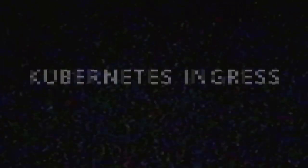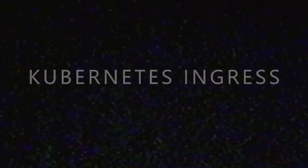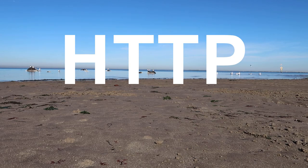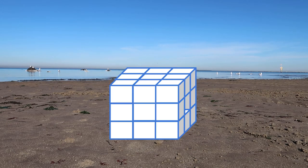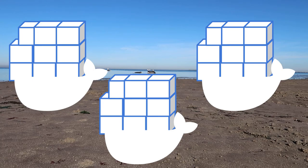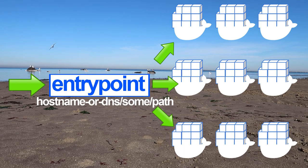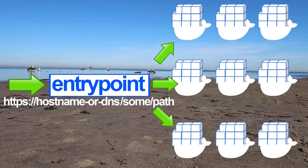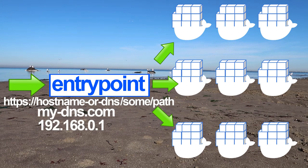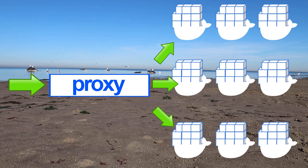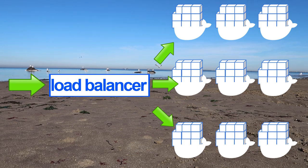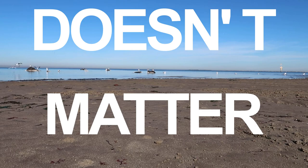What is an ingress controller? To understand, we have to look at the fundamentals of web traffic and systems. Every system, whether it's a single application or a bunch of microservices, has an entry point for receiving traffic. This entry point can accept traffic in the form of a URL, a protocol, hostname or DNS, and a path — sometimes even a port number. This endpoint is usually identified by either a DNS or an IP address.